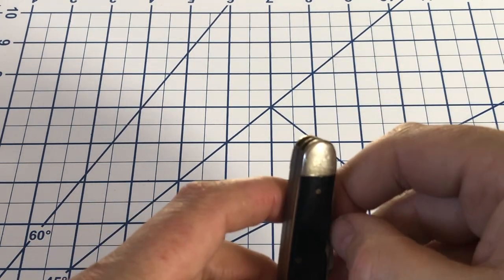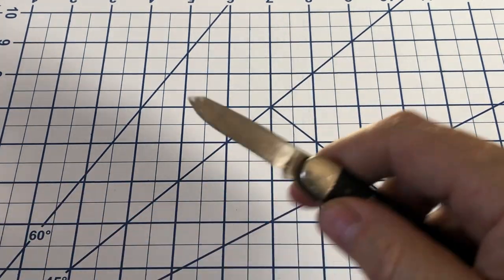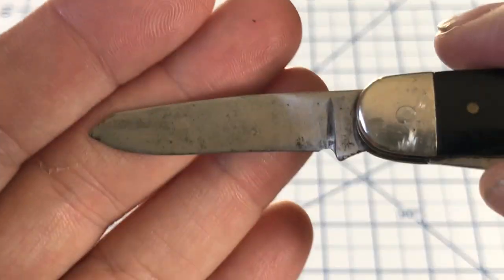Main blade is about two and a half inches long. Then has a secondary blade, a spay blade, as you can see.